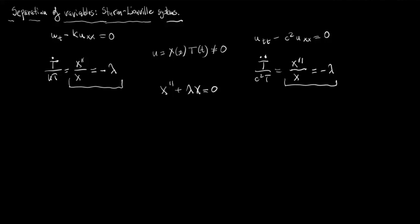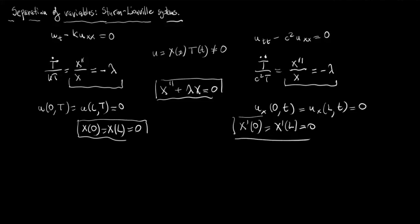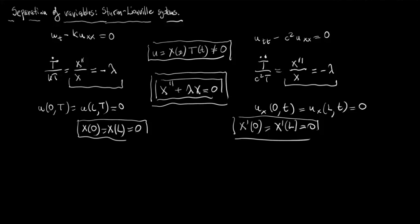When we imposed boundary conditions, we observed that this ODE must also satisfy boundary conditions. On one side, in the heat equation case it was X(0) equals X(L) equals zero, and in the wave equation case it was X'(0) equals X'(L) equals zero. So the postulate of separation of variables leads us to a boundary value problem for a certain linear ODE in which a parameter lambda appears.